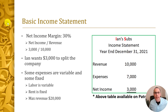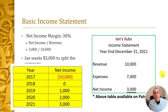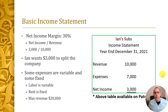Since Ian is not a public company, he doesn't have to provide any detail to anyone. But Ian wants you to invest — he asks for $3,000 to split the company 50/50. You need more information. Ian doesn't really know how to put together an income statement and says that's all he can provide. So you ask to see the income statements for the prior three or four years: four years ago he had a net loss of $10,000; three years ago he broke even; two years ago a profit of $1,000; last year $2,000; now $3,000. You feel a little more comfortable investing.